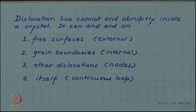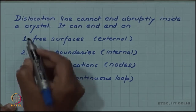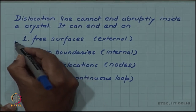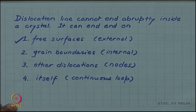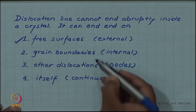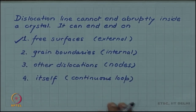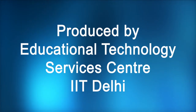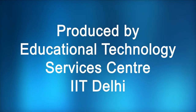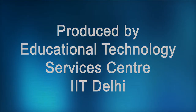We have already seen that it can end on a free surface. These other configurations — grain boundaries, nodes, and loops — we will be looking at in the coming videos.